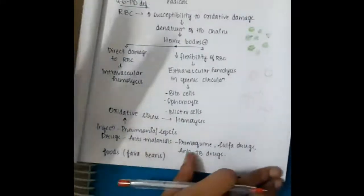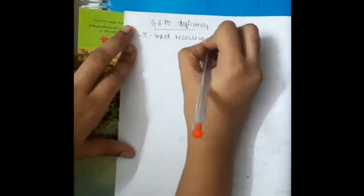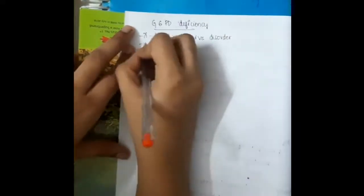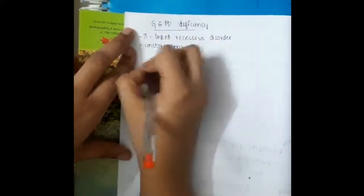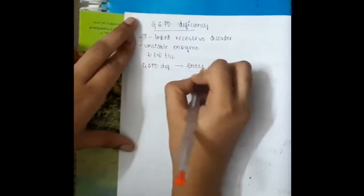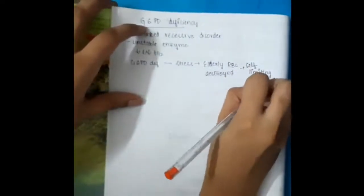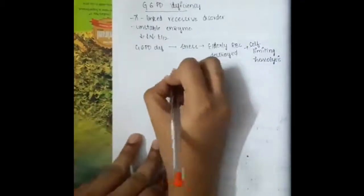G6PD deficiency is an X-linked recessive disorder. This is an unstable enzyme. G6PD deficiency mainly occurs in stress, and when there is stress, destruction of elderly RBCs occurs. This will lead to self-limiting hemolysis. In G6PD deficiency, the hemolysis is self-limiting. It limits on its own.